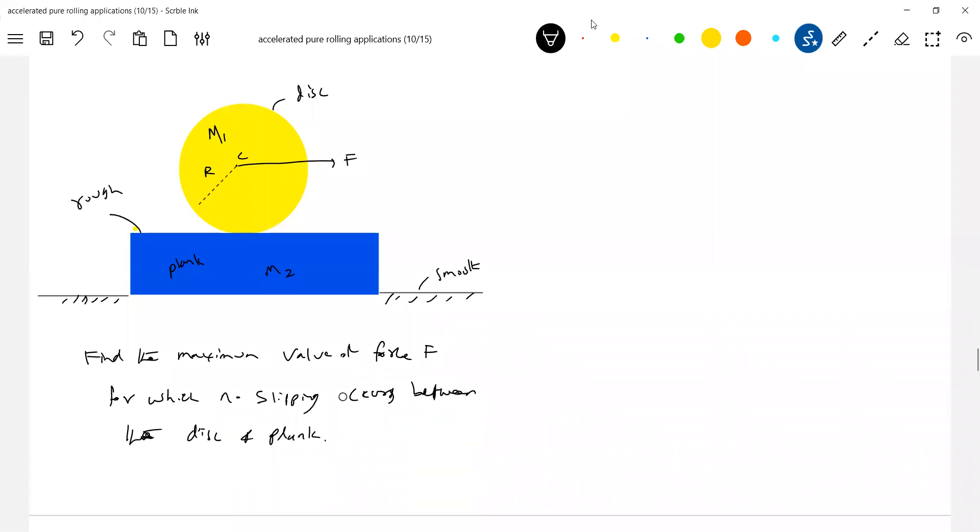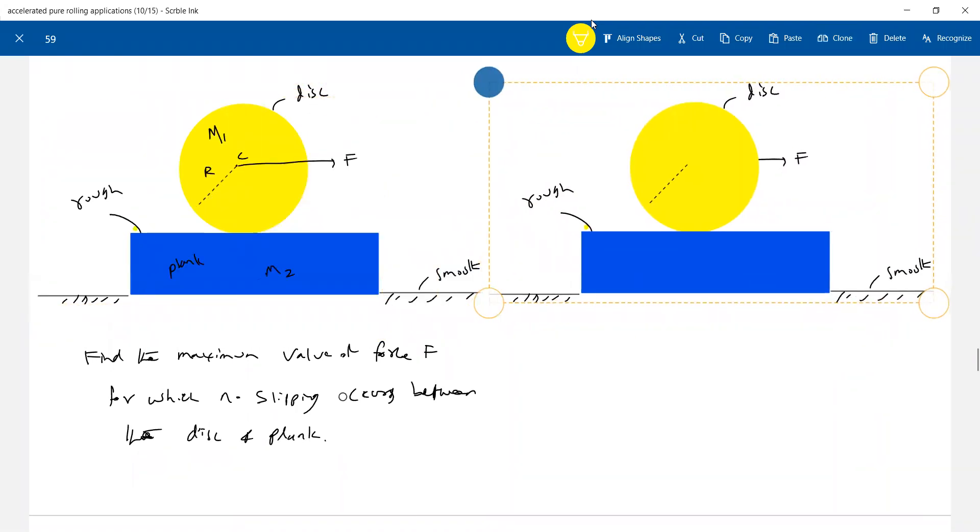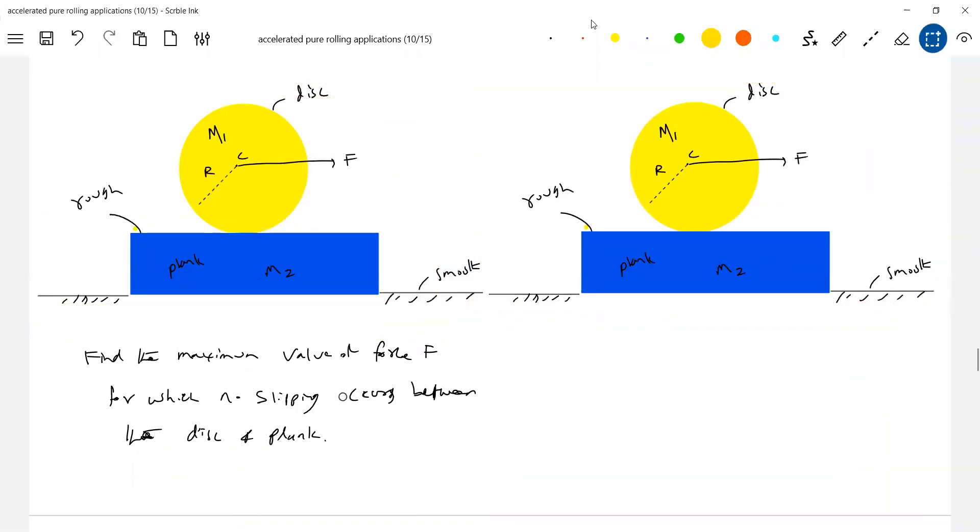Very first question, how to get the direction of friction? You have enough basics, just know what you learned, you should know how to apply it. There's a rigid body. Try this one, get the direction of friction.